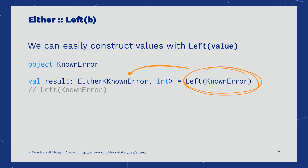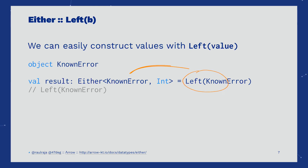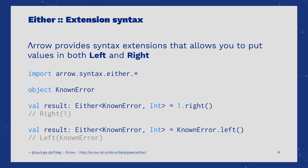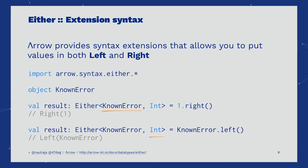As we can see here, we are modeling a known error without using exceptions and putting that on the left side, because our computation is mostly going to happen on the Int, which is the right side. Arrow provides extension syntax for Either. We can easily lift values to the right and left case, provided the receiver declares a type in which we know what the other case is.